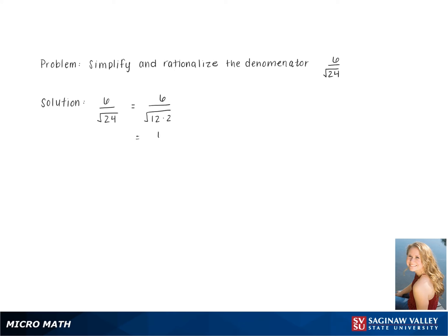We see that 24 is also 12 times 2, and 12 times 2 can be broken down further into 2 times 2 times 6.